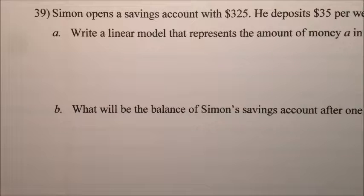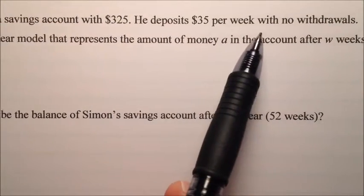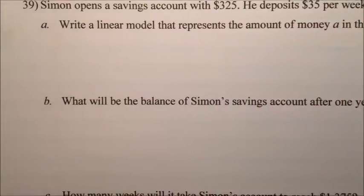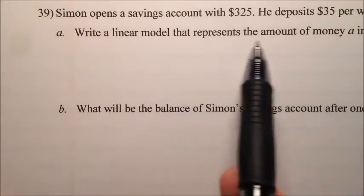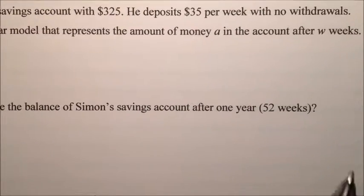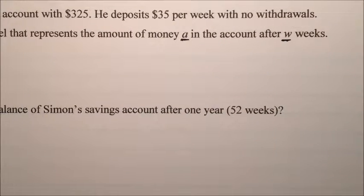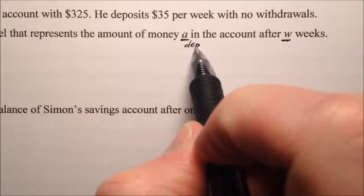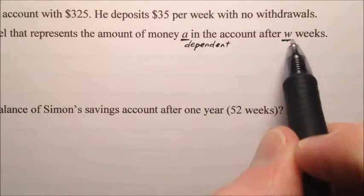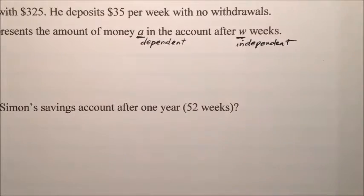So number 39, Simon opens his savings account with $325, and he deposits $35 per week with no withdrawals. Basically what's going on is he's put a little money in an account and he's going to add to it forever. We're asked to write a linear model that represents the amount of money, and we're going to use A for the account and W for weeks. The amount of money in the account is our dependent variable because it depends on how many weeks have gone by, and the weeks will be our independent variable.